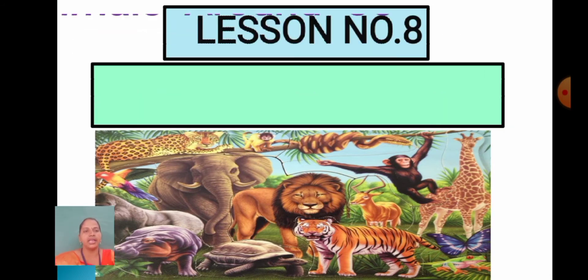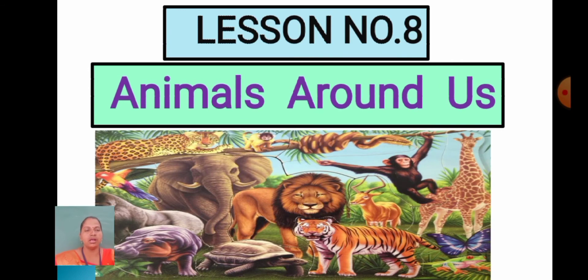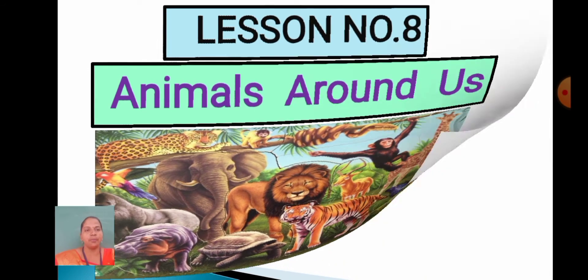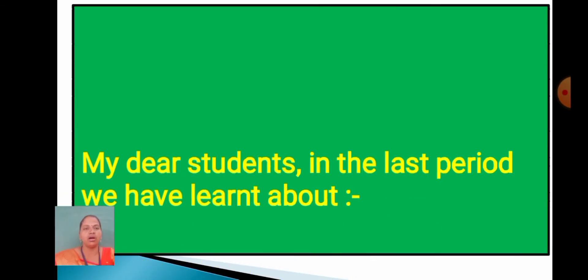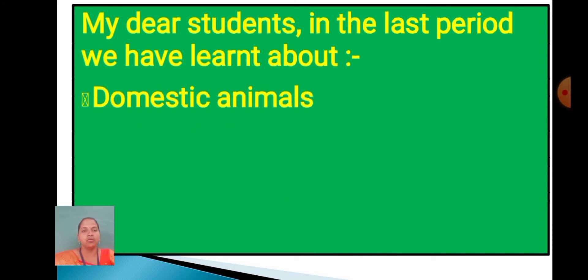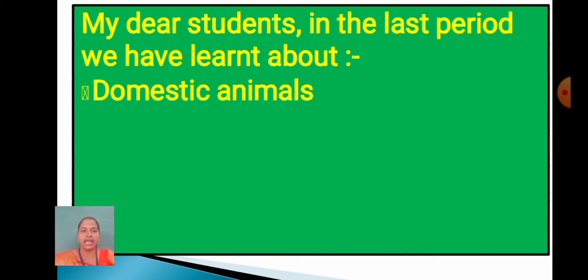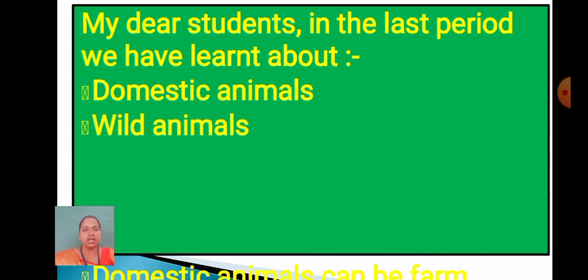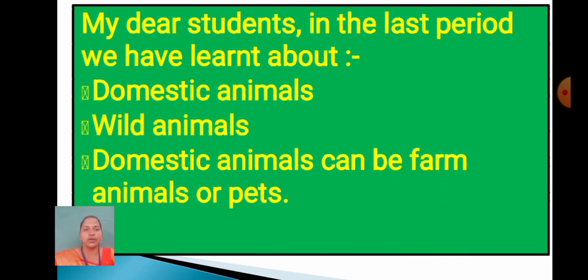Animals around us. In the previous period, we learned about domestic animals, wild animals, and domestic animals can be farm animals and pets.